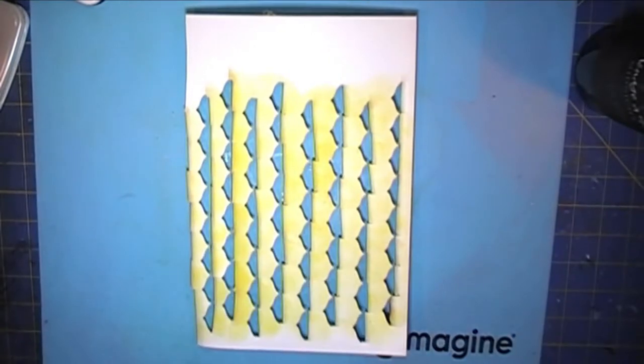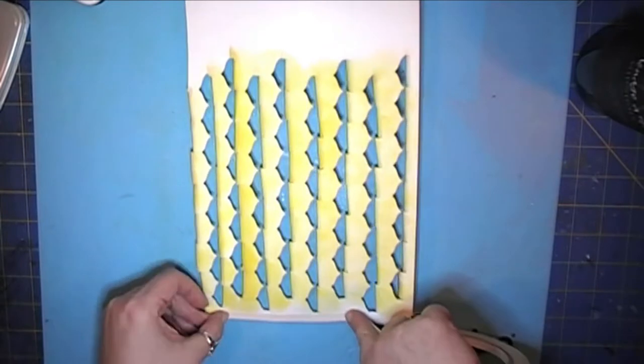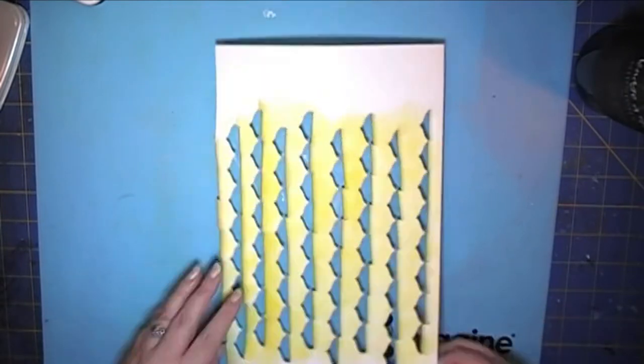I also sprayed the back of the sheet, which is really the front of the wrap, with cantaloupe firework spray to give it a little bit of color and shimmer.